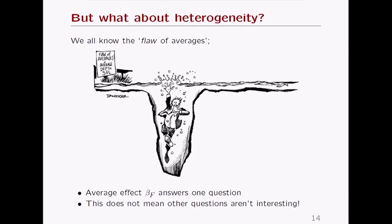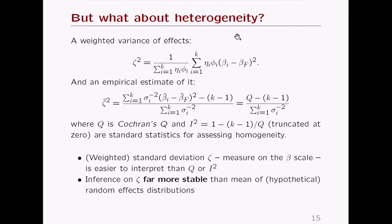Just estimating an average effect isn't the full story — as the flaw of averages reminds us, you can drown in a river of average depth three feet. The same ideas can be extended to a weighted variance parameter, zeta-squared, which is empirically estimated as a shifted and scaled version of Cochran's Q and is closely related to I-squared. Zeta is measured on the same scale as the betas — a nice interpretable measure of heterogeneity.